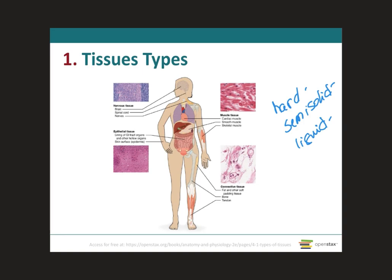According to structure and function, body tissues can be classified into four different categories: epithelial tissue, connective tissue, muscular tissue, and nervous tissue. This image shows the general example of all four, and on the next slide I will explain them in more detail.